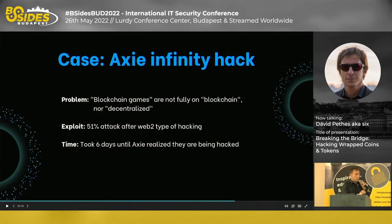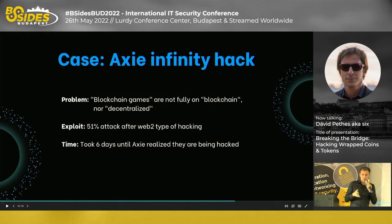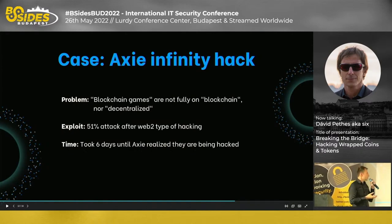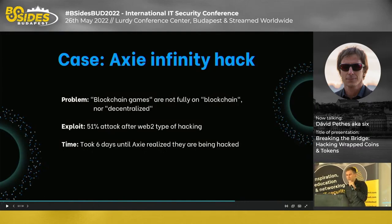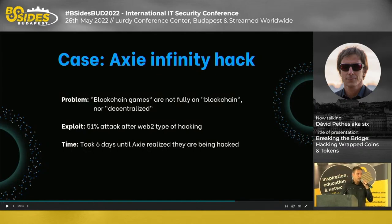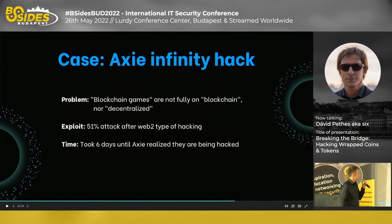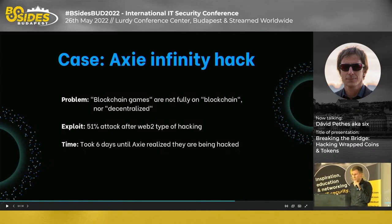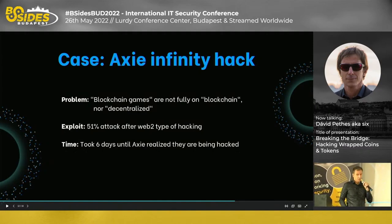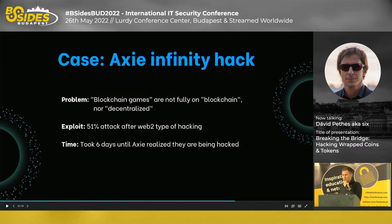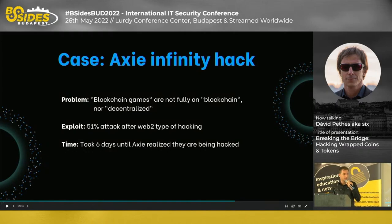We also had the Axie Infinity hack. It's interesting because it was done by state-level actors who used Web2 exploits. They breached enough nodes to execute a 51% attack and took over the Ronin bridge. If you control 51% or more of the system you can push your own transactions. Sadly, it took six days until they realized it — they had no monitoring for possible issues — six days, 600 million dollars.